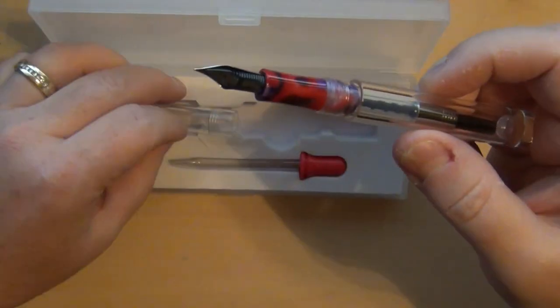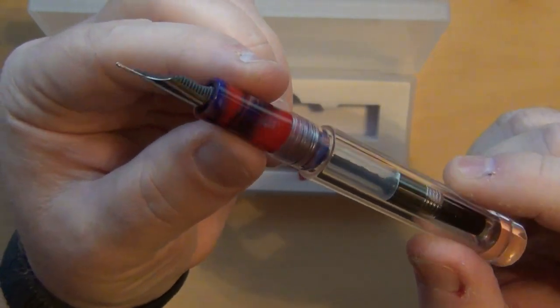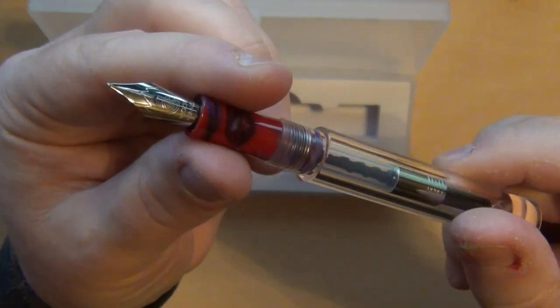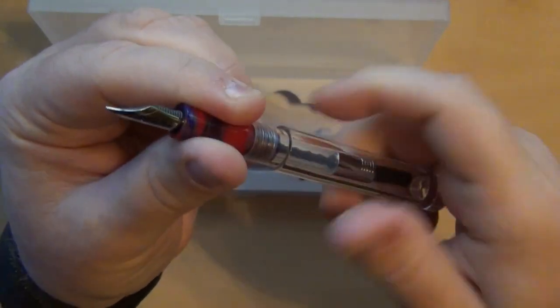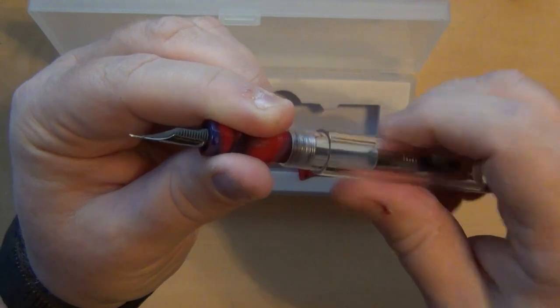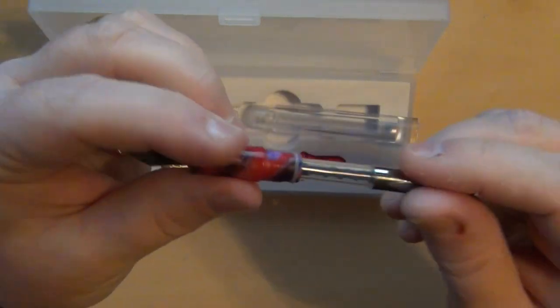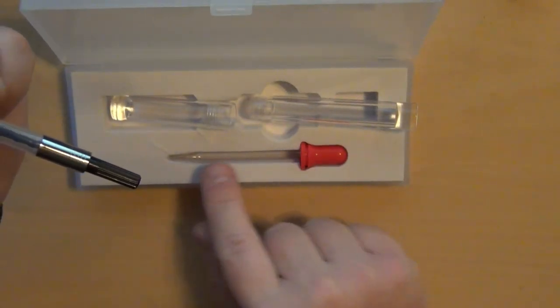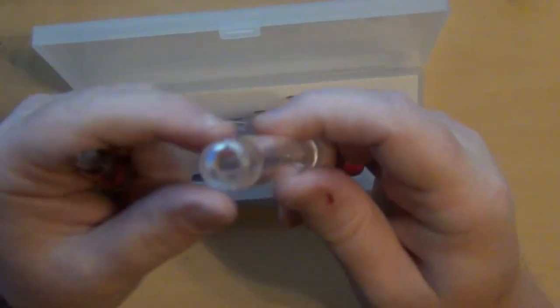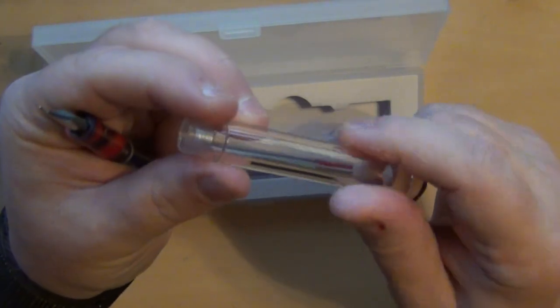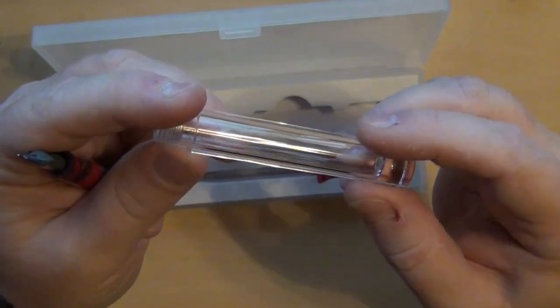It comes with, instead of a clear acrylic for a section, it does kind of have that red mottled look to it. It is a cartridge converter at first if you want, but it also can be, if you so choose, it can be an eyedropper filler. Not only do they give you a converter to put into it, they do give you a little pipette that if you choose to eyedropper fill this barrel, you can. Of course you might want to put some silicone grease on the threads, but you can actually look at the ink slosh around if you so choose.